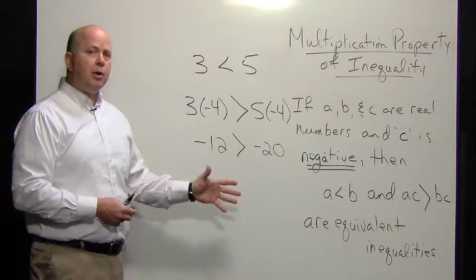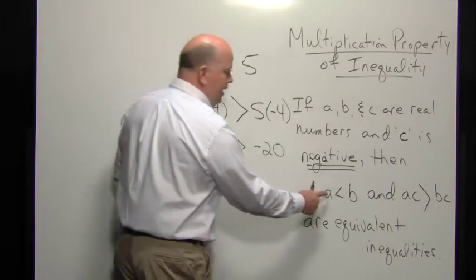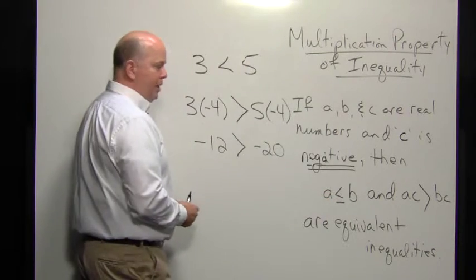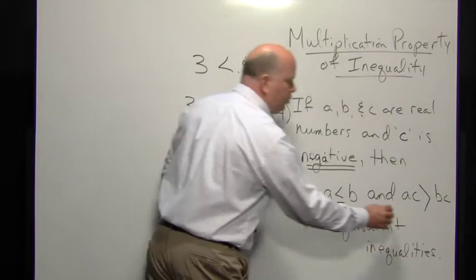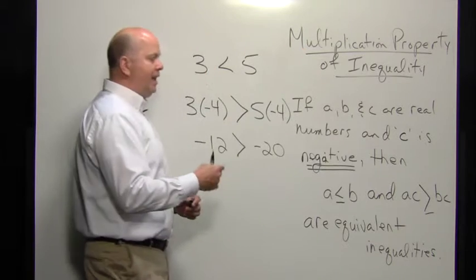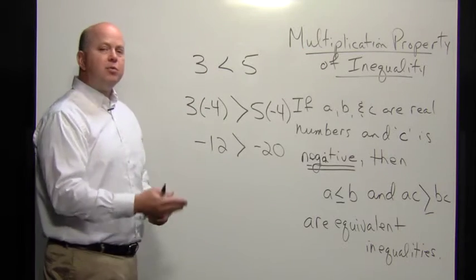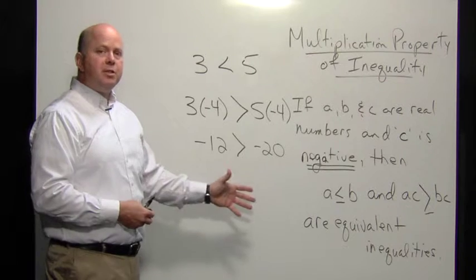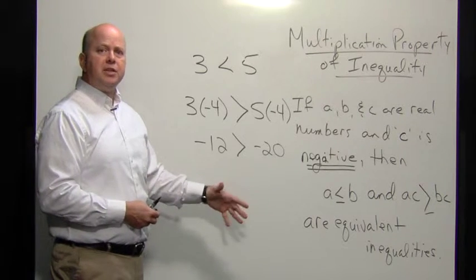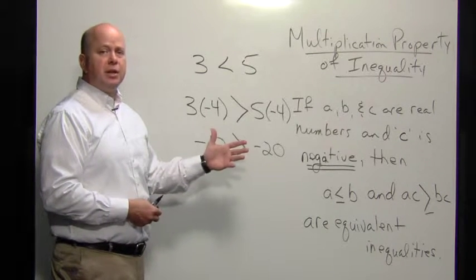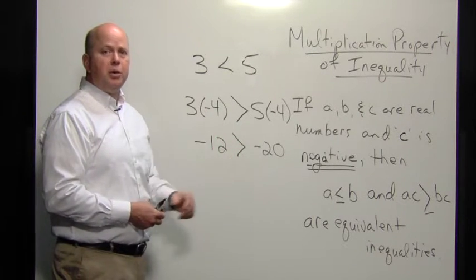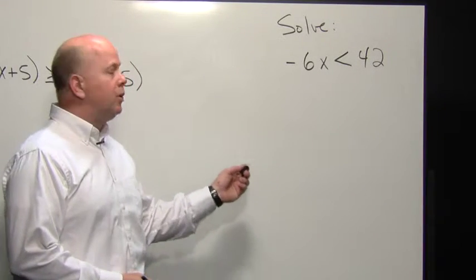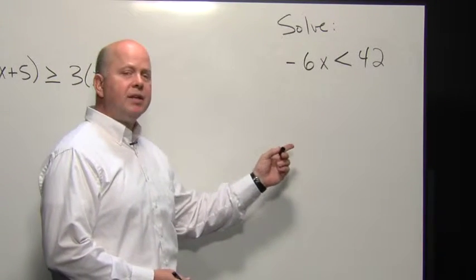This property also applies if A is less than or equal to B, then the equivalent statement would be A times C is greater than or equal to B times C. It also works for division, because division is essentially a representation of multiplication.